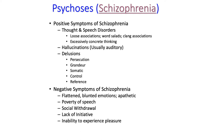Delusions of some sort are also a very common symptom of schizophrenia, and there are many different types. Delusions of persecution occur when a person believes that other people are plotting against them, talking about them behind their back, or scheming to do them harm. Delusions of grandeur include a feeling of importance and significance about oneself that goes far beyond any evidence — they truly believe they are special people, better than everyone else.